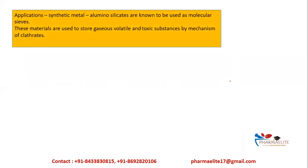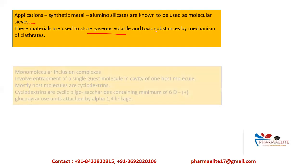Now, what are the applications of clathrates? They can be used as synthetic metal aluminum silicates to be used as molecular sieves. They are also used to store gaseous, volatile, and toxic substances by the mechanism of clathrate formation.